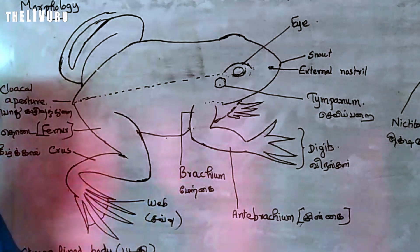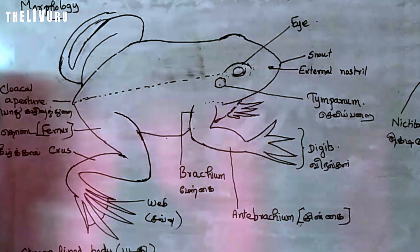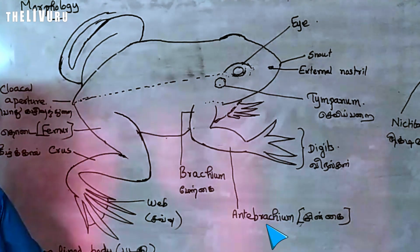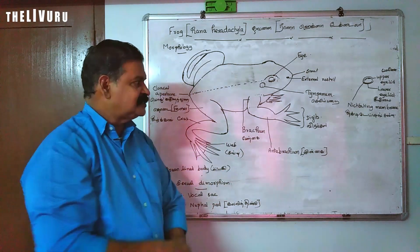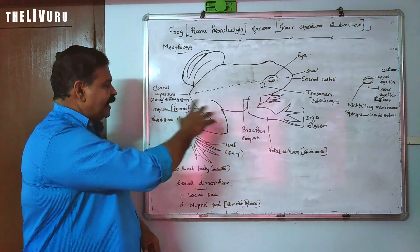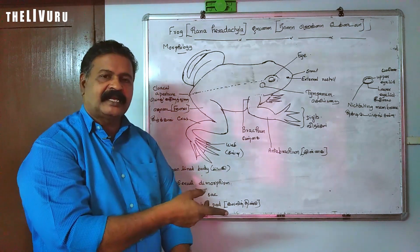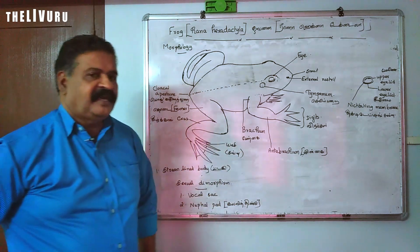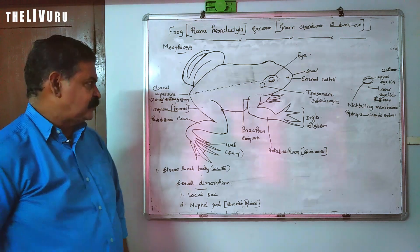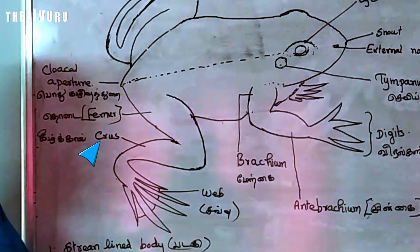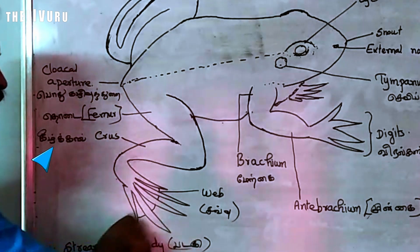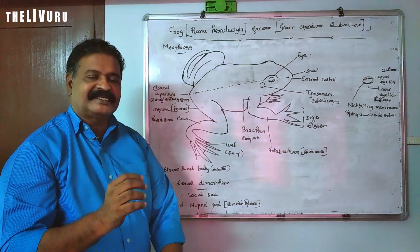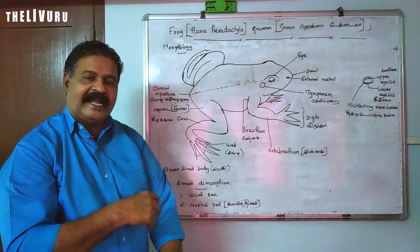The frog has four limbs. The forelimbs have 4 digits and the hindlimbs have 5 digits. The hind limbs are longer than the forelimbs. The hind limb parts are: femur (thigh), crus (shank), and digits with webs. The webbed feet are an adaptation for swimming.